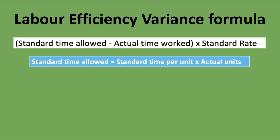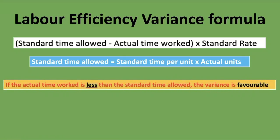What does the variance mean when it's favorable or unfavorable? If you punch the formula into your calculator and get a negative answer, the variance is unfavorable. If you get a positive answer, it's favorable. If the actual time worked is less than the standard time allowed, the variance is favorable — meaning you worked for less time than you planned, which is a good thing because we saved time.